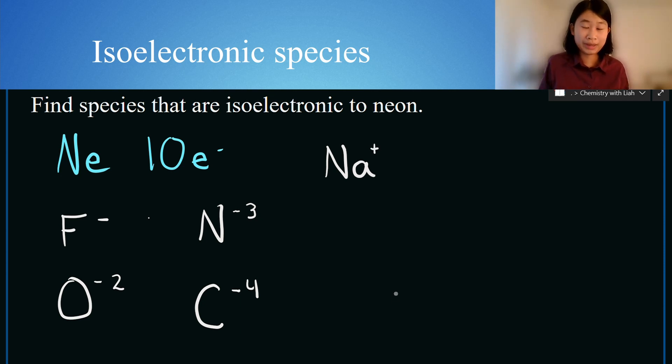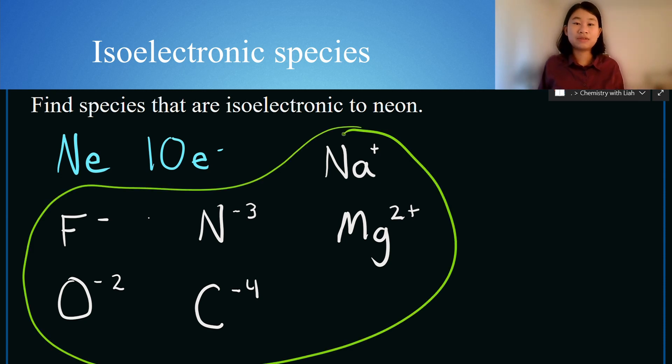Because we took away one negative, and on that note we can also make some more cations, ions with a positive charge. Those can include magnesium as well. Now magnesium has 12 electrons and so we would have to take away two electrons, meaning we would be left over with the magnesium ion with a 2 plus charge. So we can say that these ions have the same electron configuration and the same number of electrons as the neon atom.